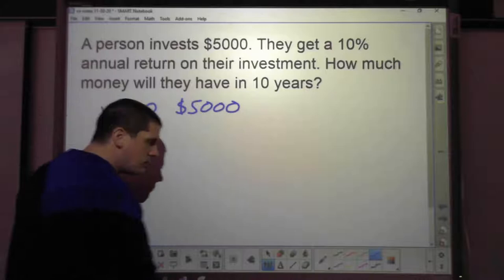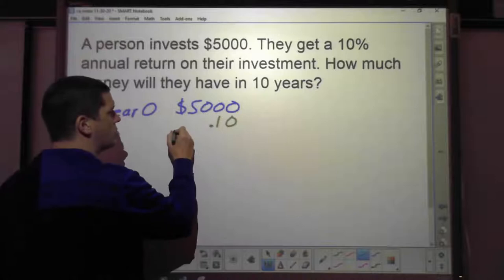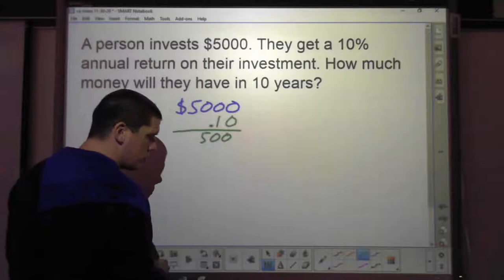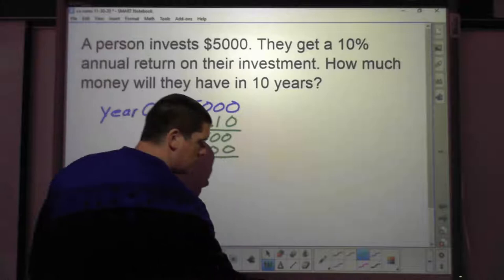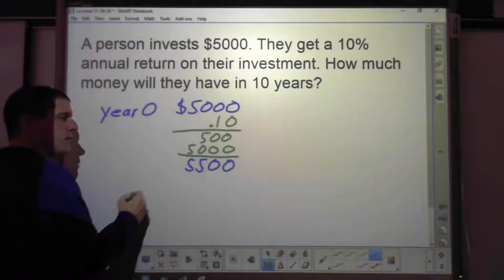Alright. So now let's see if you're right or wrong. If you said they'd have $10,000, you are incorrect. I know it's very easy to think that. Like, oh well, I mean, 10% of $5,500, they're getting $500 for 10 years. That's another $5,000. So of course, well, that's the problem though, is that we're looking at a 10% annual return. It's not a 10% return from their initial investment. It's an annual return.